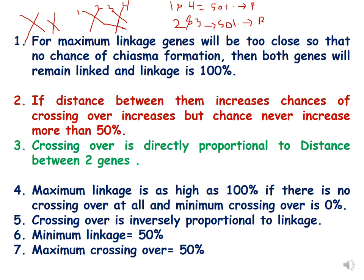The crossing over percentage ranges from 0 to 50 percent, and the linkage percentage ranges from 50 percent to 100 percent. The maximum percentage of crossing over between two genes is 50 percent, and the minimum percentage of linkage is 50 percent. Crossing over is inversely proportional to linkage — more distance means more crossing over and less linkage; less distance means less crossing over and more linkage. Minimum linkage is 50 percent and maximum crossing over is 50 percent.